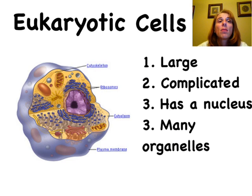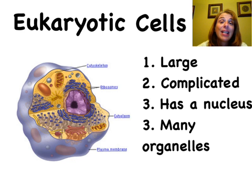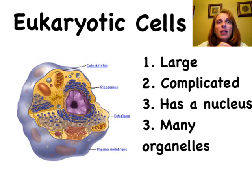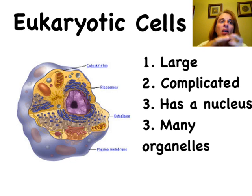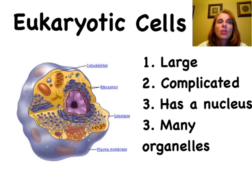Eukaryotic cells are much larger than prokaryotic cells. And the main reason that they can be much larger is because they have little organelles and compartments inside. Those different organelles inside give them a lot more surface area. And because they have compartments to put things into, they can become more specialized and then they can get much larger as a result.